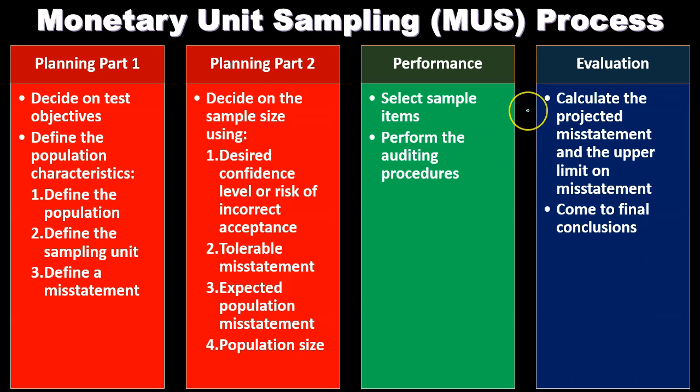Then we have the evaluation phase. Once we have performed the monetary unit sampling, we calculate the projected misstatement and the upper limit on misstatement, and then come to a final conclusion. We will now go through some of these steps in more detail.